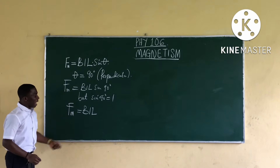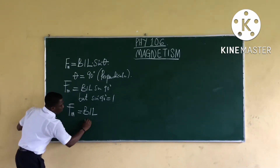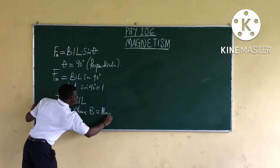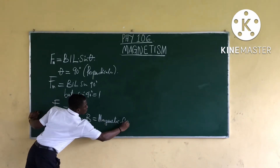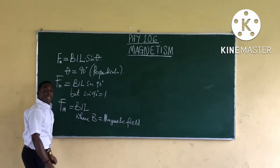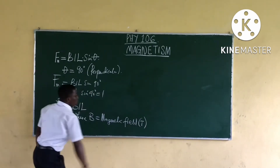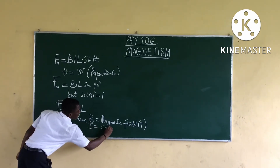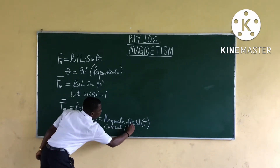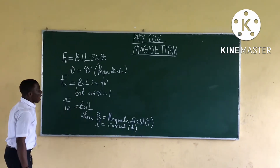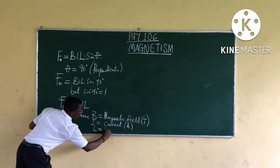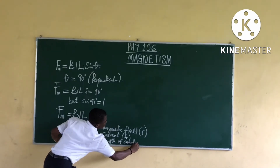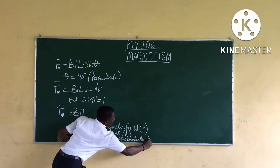In this formula, B is the magnetic field with units of Tesla (capital T), I is the current in amperes (capital A), and L is the length of the conductor with units of meters.